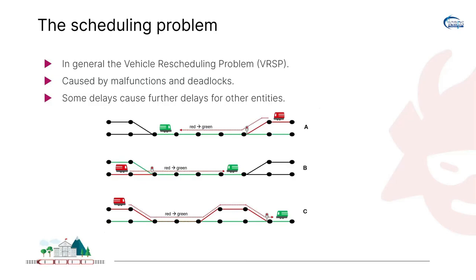The delay caused by one train could lead to the delay of multiple other trains. In this example, we have two trains, red and green, both who want to share the same path. Given that there's only a single path and two of them, one has to wait for the other to pass. But if the green train is delayed, the red train which depends on it will also get delayed. And if multiple other trains depend on the red train, this could just cause chaos completely.